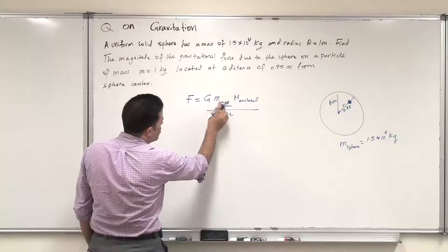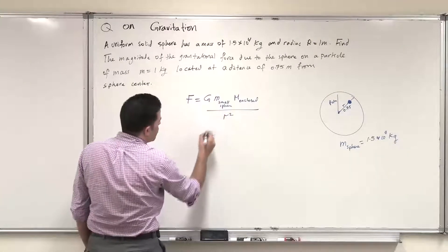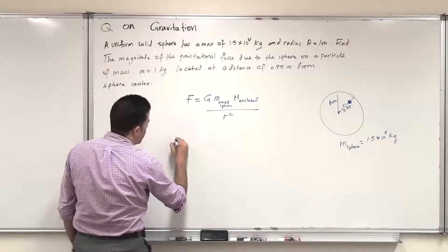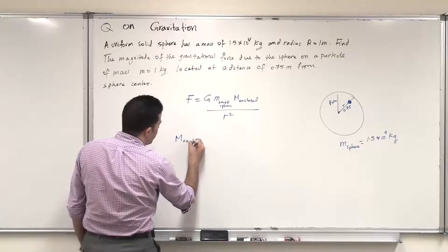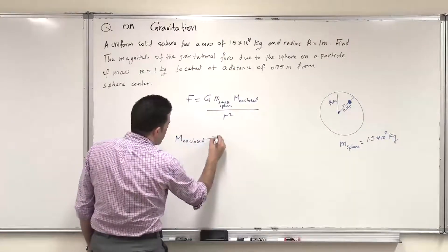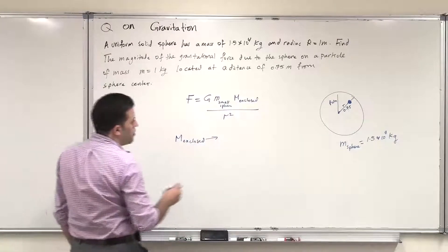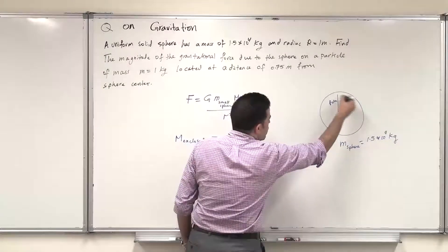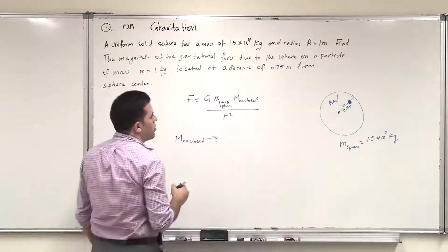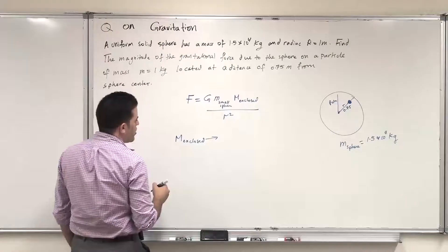Now, we know the mass of the small sphere, we know this constant, but we need to find the mass enclosed. In order to find the mass enclosed, according to the shell model, this mass enclosed will be causing the force on the small mass.